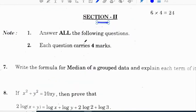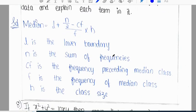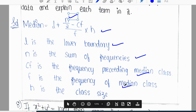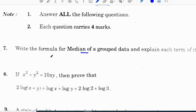Section 2, first question: Write the formula for median of grouped data and explain each term. The formula for median is L + [(N/2 - Cf)/F] × H, where L is the lower boundary, N is the sum of frequencies, Cf is the frequency preceding median class, F is the frequency of median class, and H is the class size. Most questions in the question paper are discussed in yesterday's videos.